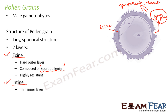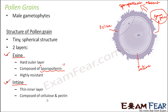Now let us look at the inner layer, that is, intine. It is a thin inner layer — quite thin when compared to exine. It is composed of cellulose and pectin, which are also components of cell walls. So basically, this is the basic structure of pollen grains.